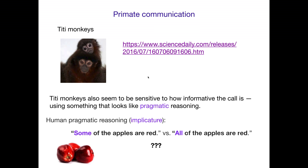TD monkeys, in addition to having a rudimentary combinatorial system to their calls, also do something else that's really cool. They seem to be sensitive to how informative the call is, using something that looks a lot like what's called pragmatic reasoning.